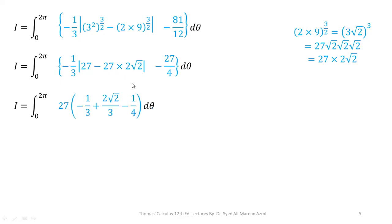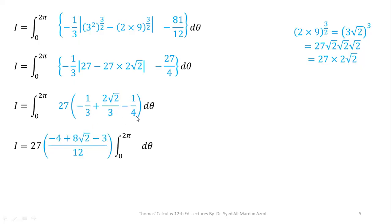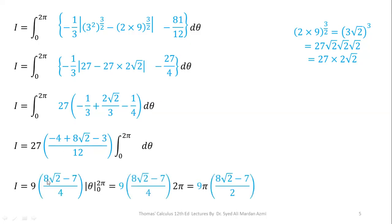Taking 12 as the LCM and simplifying, we get 8√2 − 7 over 4, and 27 and 3 cancel to give 9. So we have 9 times (8√2 − 7) over 4. The integration of dθ from 0 to 2π gives theta evaluated from 0 to 2π, which equals 2π. This 2 and the 4 cancel, giving our final answer as 9π(8√2 − 7) over 2.